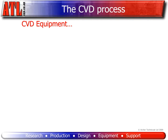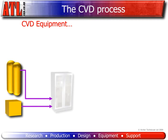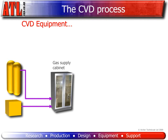Let's look at a typical CVD setup. First, we need a supply of reactant gases. In some instances they may be in liquid form, which need to be vaporized. These gas and vapor sources are represented here by gas cylinders and a liquid storage tank. From here, the gas and liquid is fed into the gas supply cabinet.